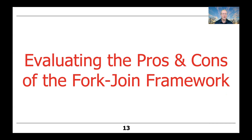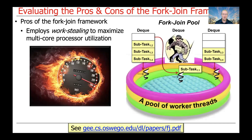Now that we've given a quick overview of the fork-join framework's capabilities, let's evaluate its pros and cons, starting with the pros. First and foremost, it's very clever in how it applies work stealing to maximize the utilization of multi-processor cores. There's a pool of threads and each thread has a queue known as a deque — a double-ended queue. Each worker thread in the fork-join pool processes work on its deque. However, if a thread has no more work in its deque, it will look around randomly at deques managed by other worker threads and try to steal work from the end of their deques.